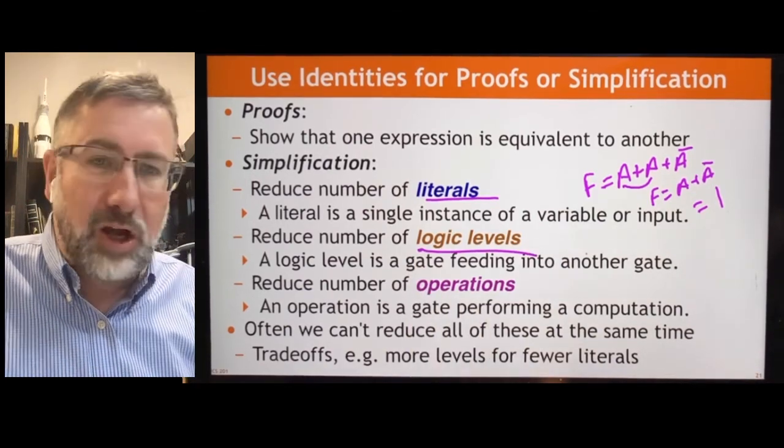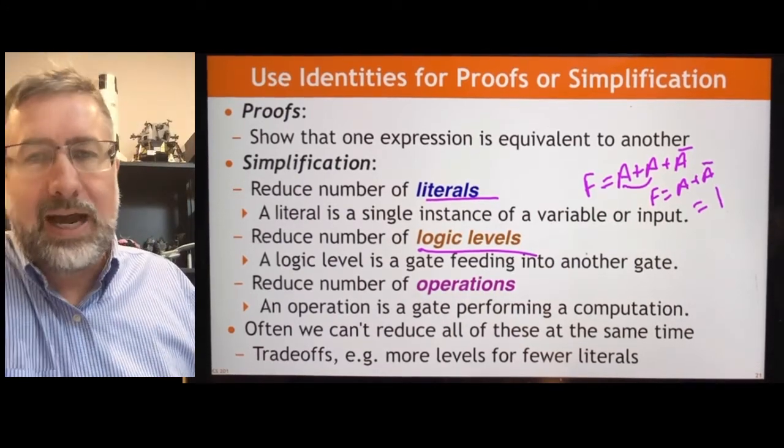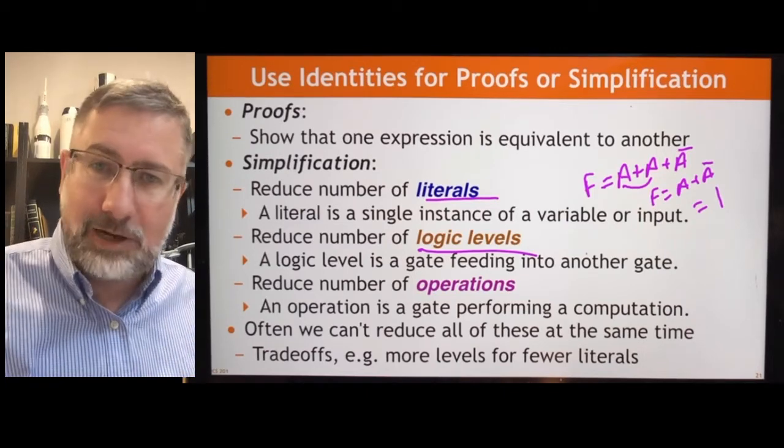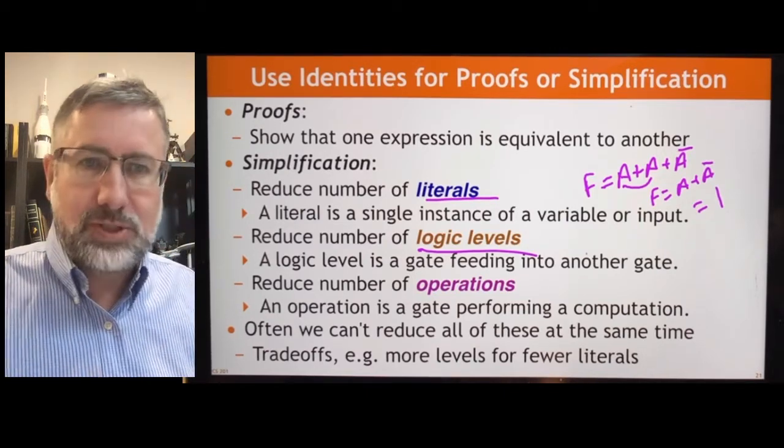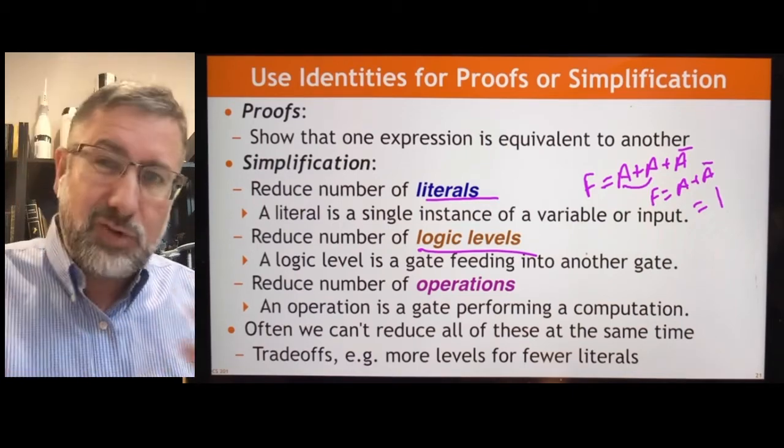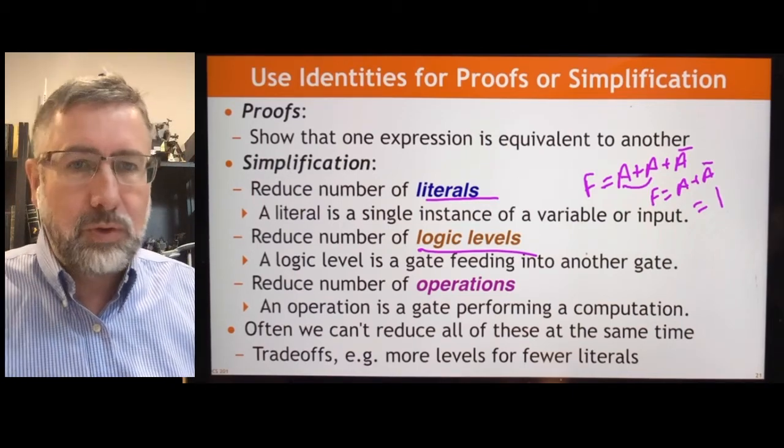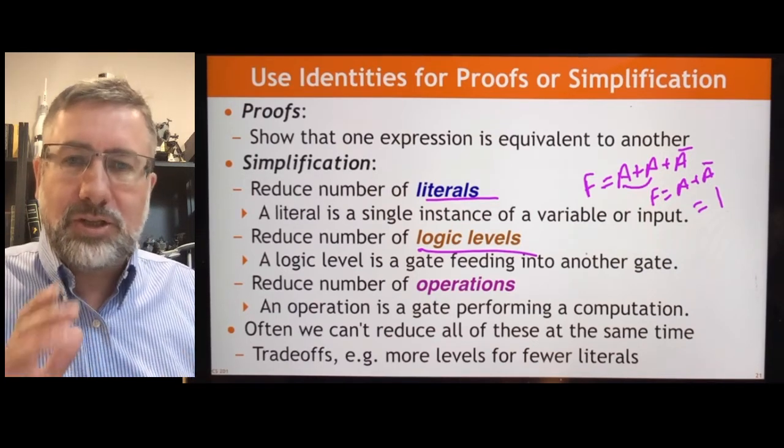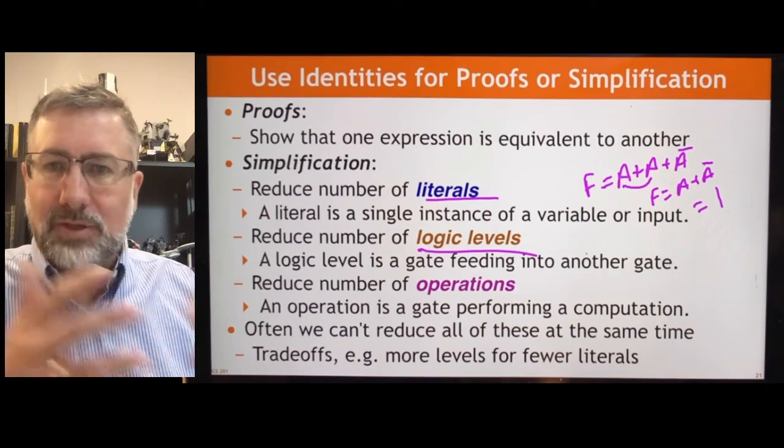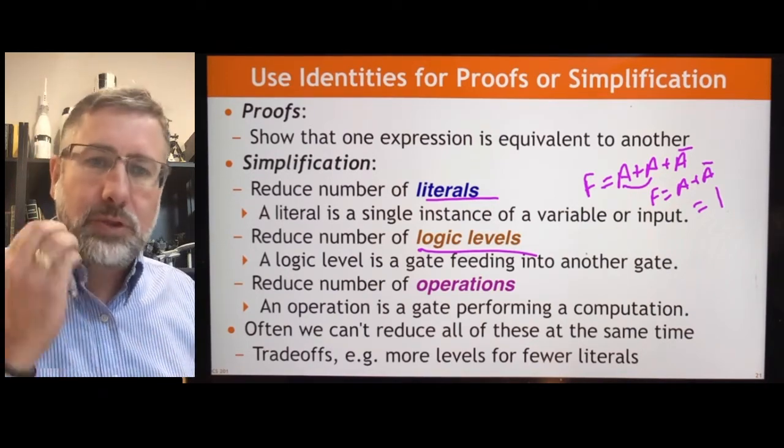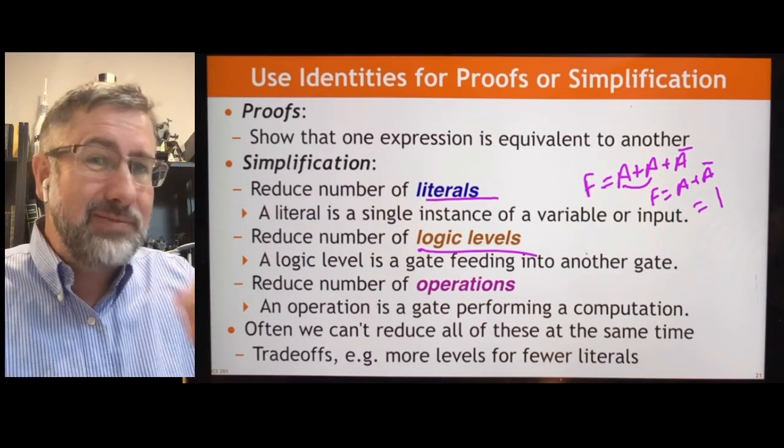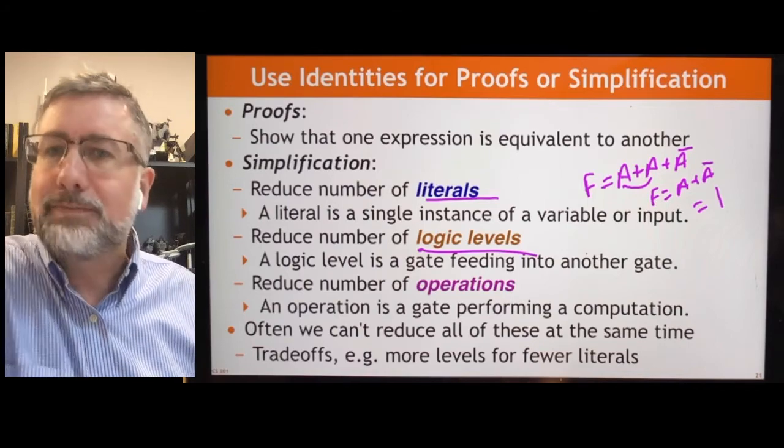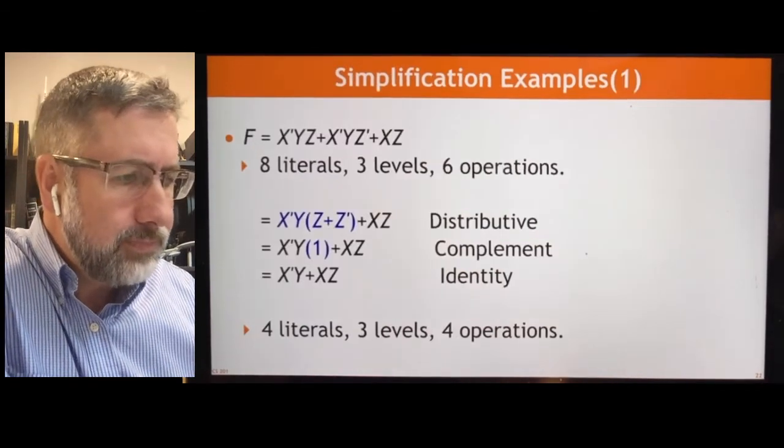We also want to be able to reduce the number of logic levels. This means how many logic gates a signal has to propagate through before it gets to the output. And we'll see that in some of the examples that we see later and the number of operations, each operation sort of corresponds to one gate as we saw before. And so if we can reduce the number of operations, we might have a simpler circuit. And often we'll see that these things are in trade-offs. They're sort of in competition. You can reduce the number of operations, but you might then have to increase the number of literals or logic levels. And as you do these simplification examples, you'll see how all that stuff works.